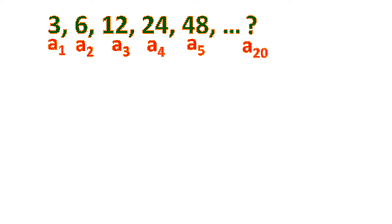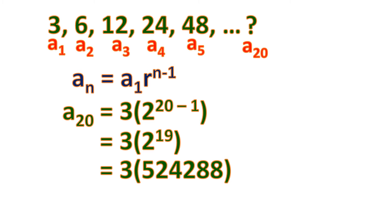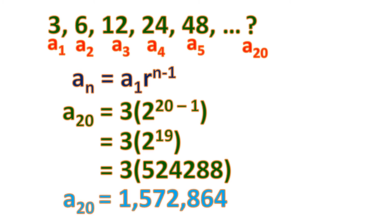Let's use this general formula to find the 20th term of our sequence. We substitute n = 20, a sub 1 = 3, and r = 2. It becomes 3 times 2 to the power of 20 minus 1, which is 3 times 2 to the 19th power. The value of 2 to the power of 19 is 524,288. Multiplying by 3 gives us the 20th term: 1,572,864.